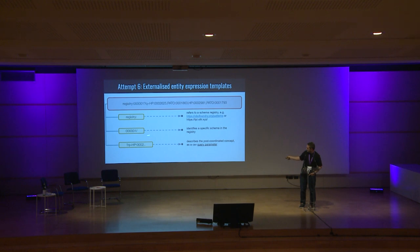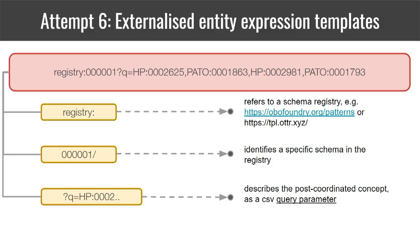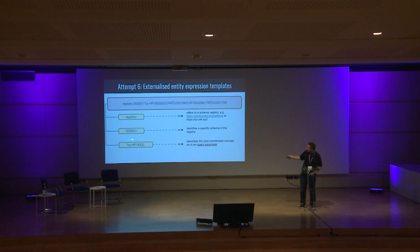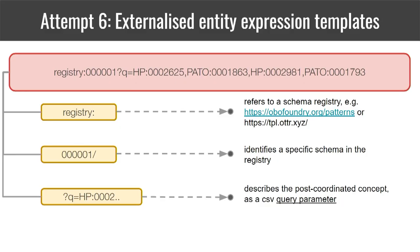The idea is: we define an expression syntax that allows us to select or identify a sort of template. For example, implementing what was asked before would be something like a DOSDP template or a template that describes equivalence expressions. This functions like a pattern library — similar to UFINO or GO — where you have a registry of patterns. This identifies a single pattern inside that registry, and then you define the entities that should be instantiated using it as a URI parameter string.